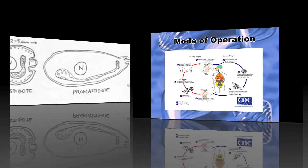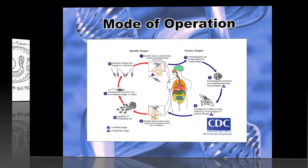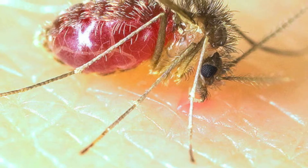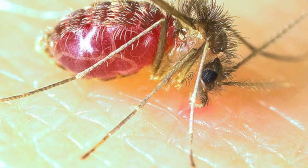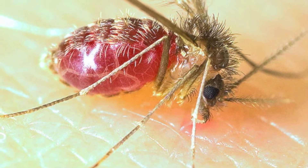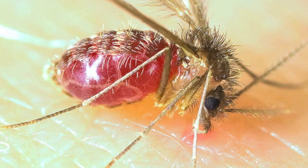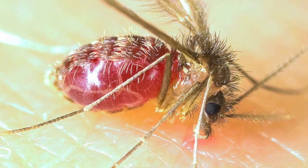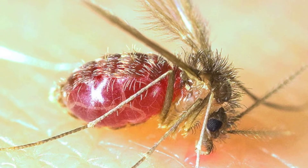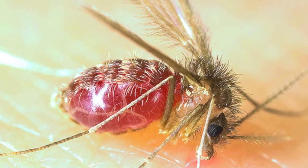Mode of Operation. The vector of Leishmania donovani is the female sandfly. The bite of this blood-sucking insect transmits the parasite to man and other vertebrate hosts. The sandflies inject the infective stage — promastigotes — during blood meals.